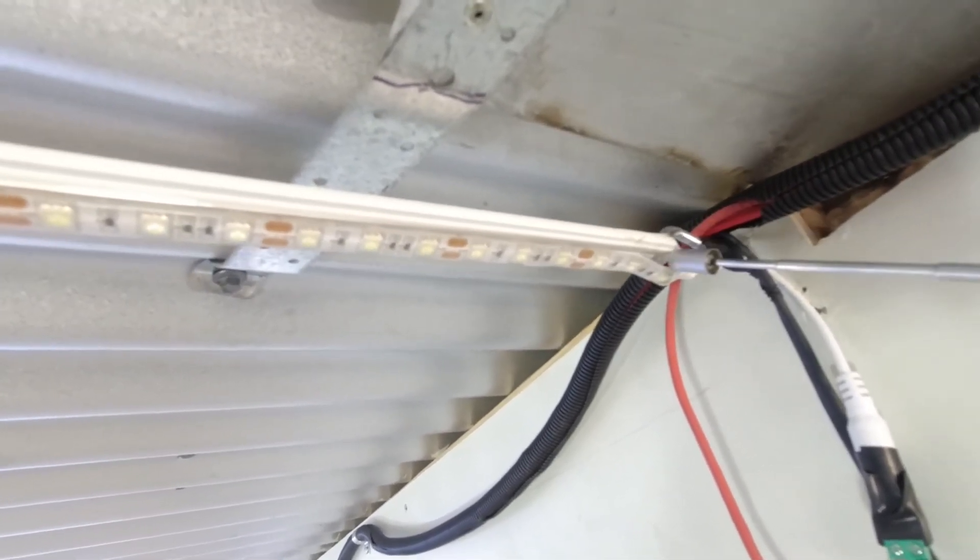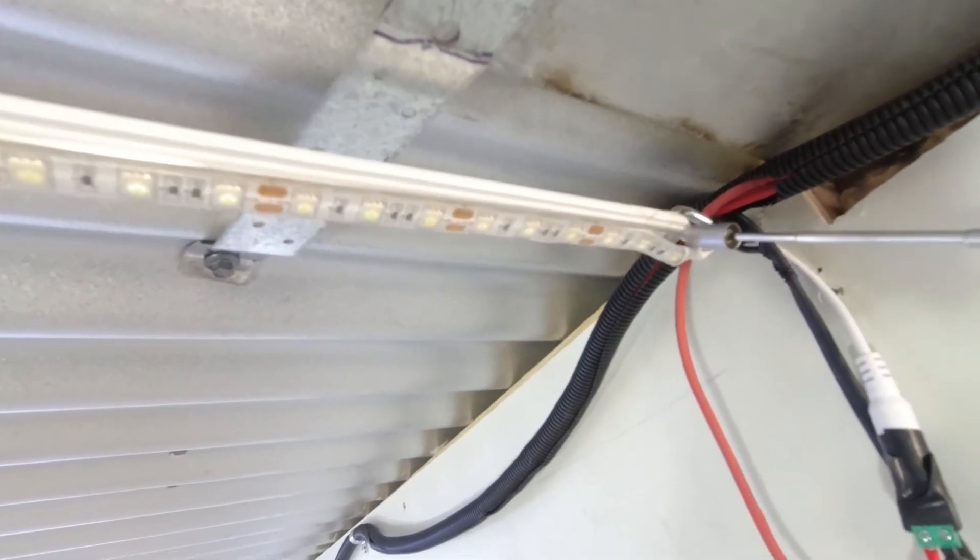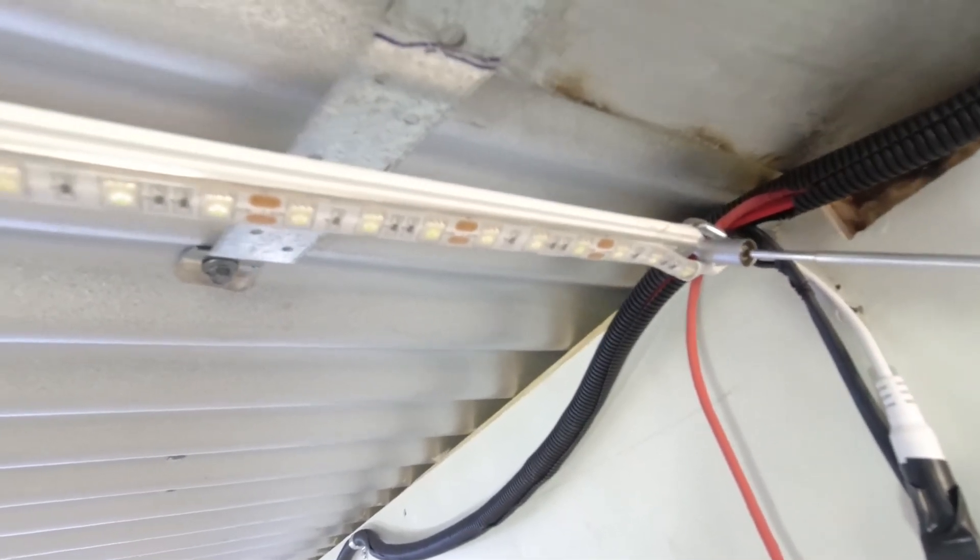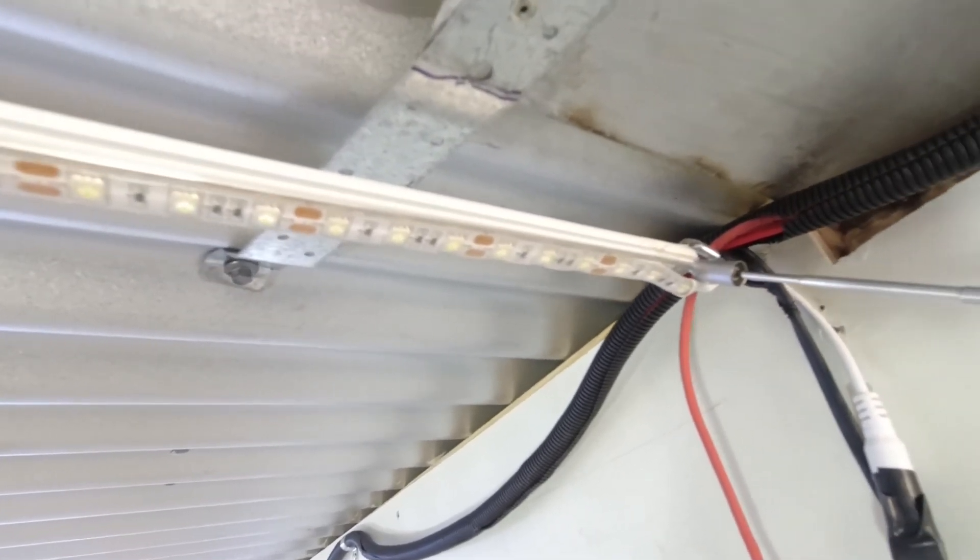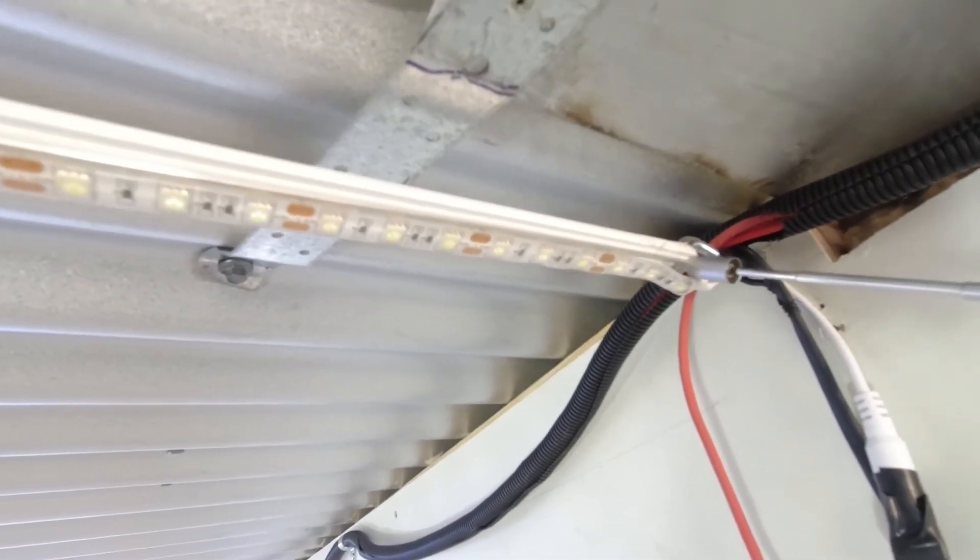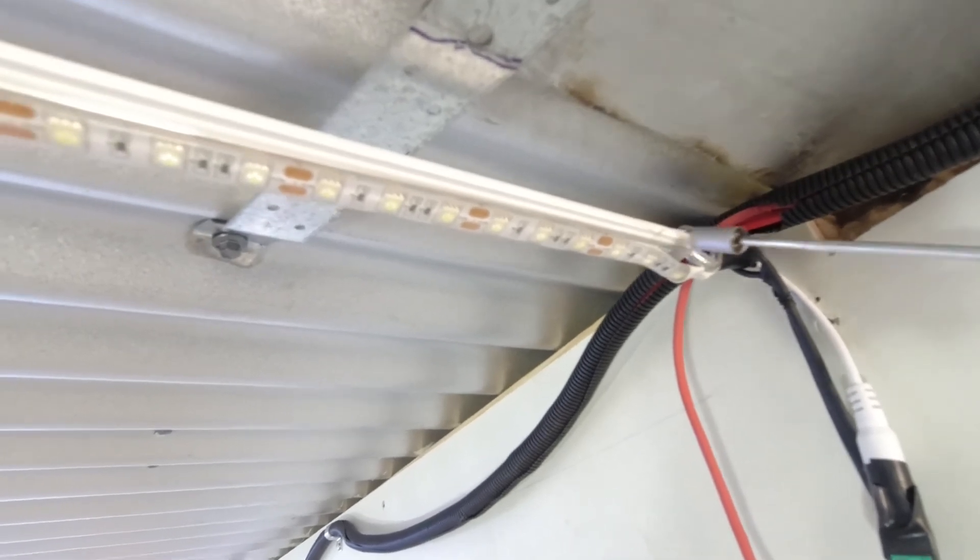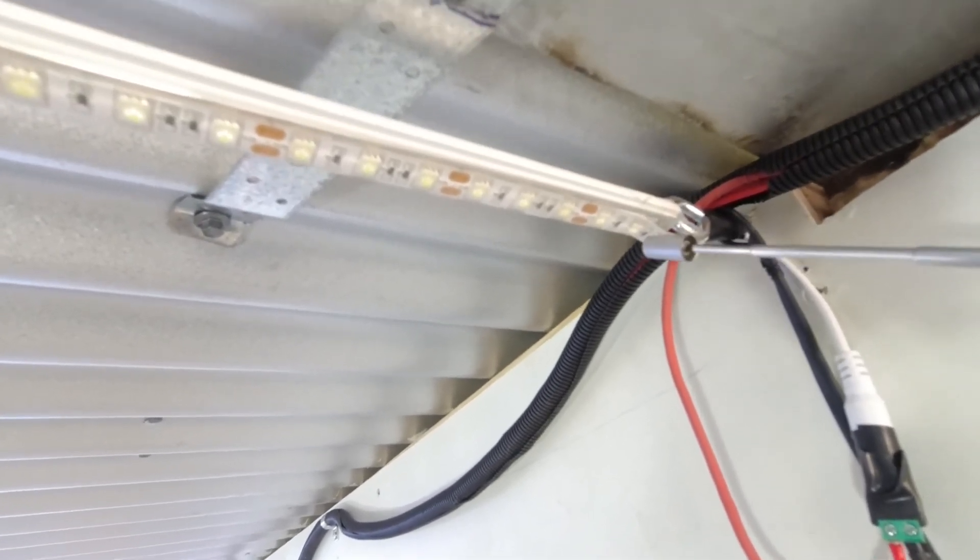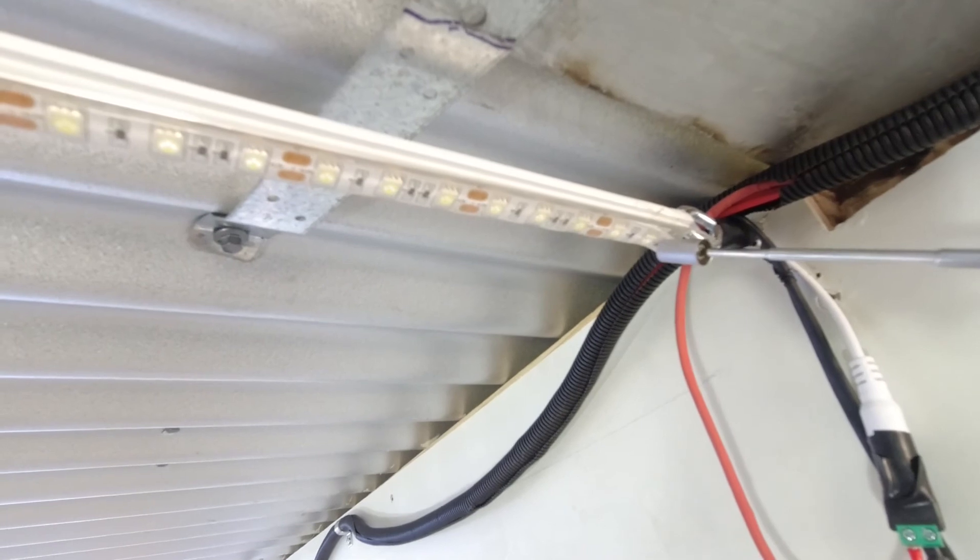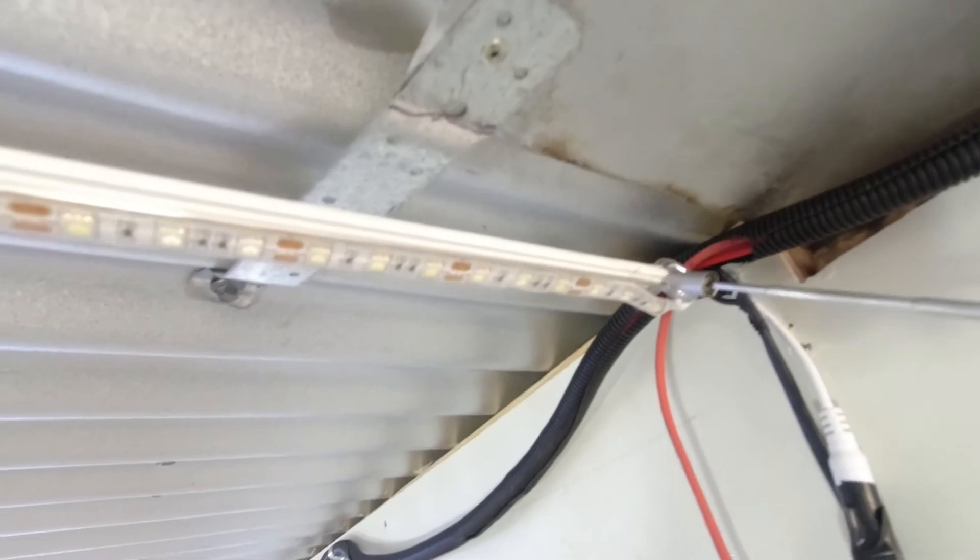And then using a through adhesive tape, there's a 12mm aluminum strip, flat aluminum strip, glued to the flat surface of this conduit. And lastly, the LED strip is taped to the aluminum strip.